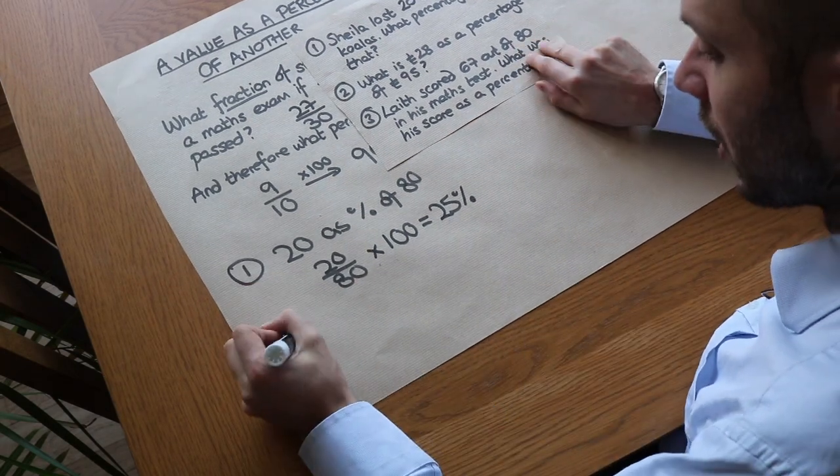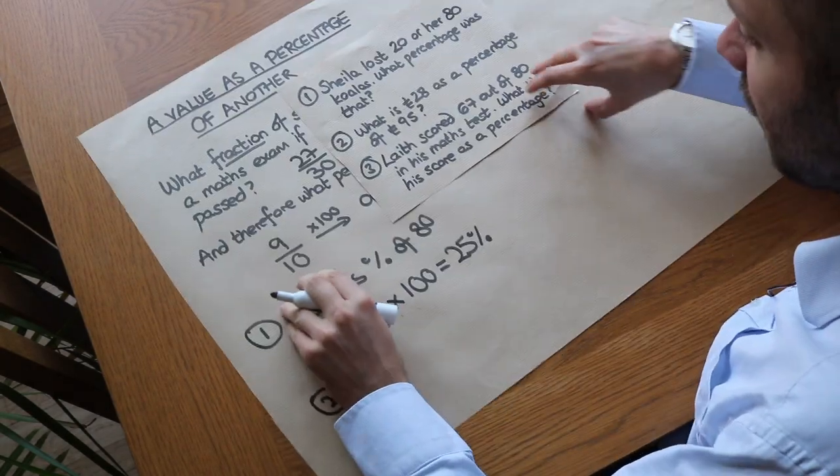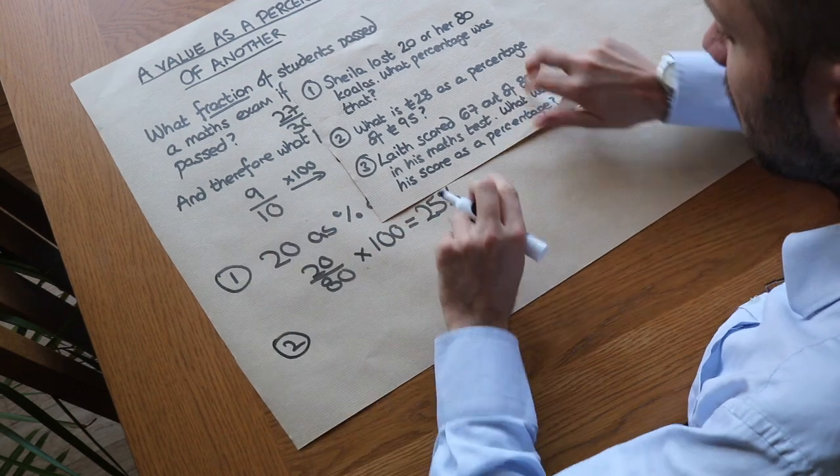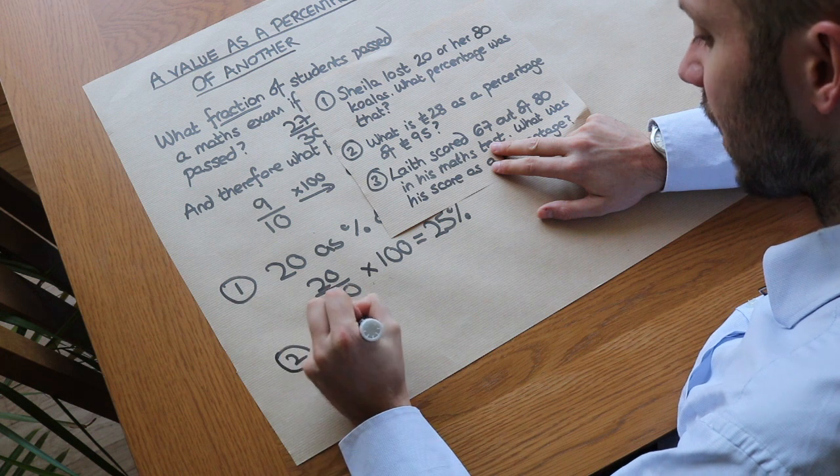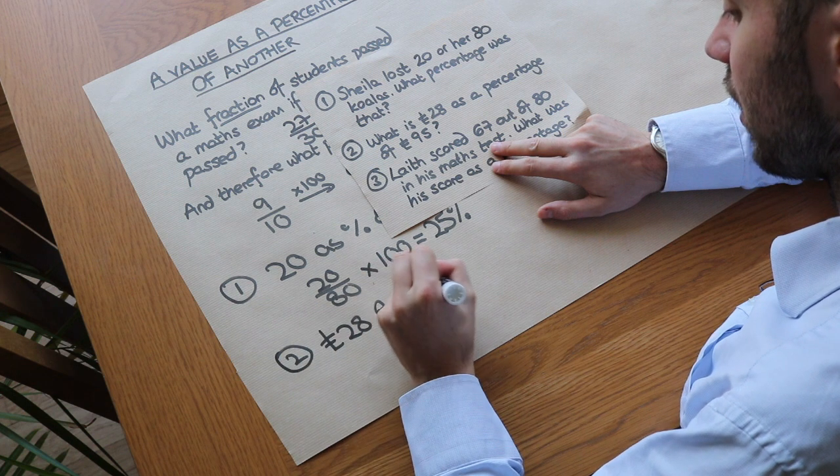But this also works when the number is more awkward and we can't do it in our head. So what about 28 pounds as a percentage of 95? So it's 28 pounds as a percentage of 95 pounds.